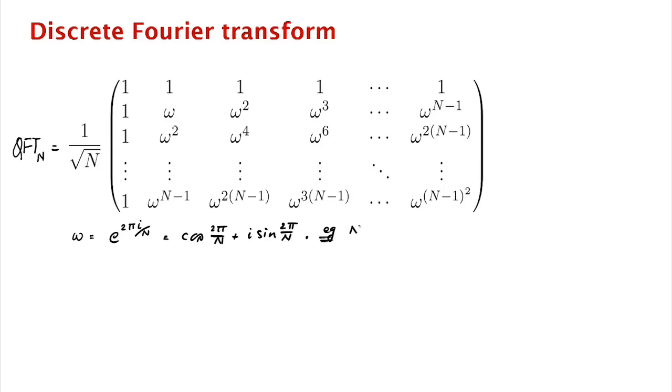So for example, if n was equal to 8, then this would be cosine of 2 pi by 8, which is pi by 4. So omega would be 1 over square root 2 plus 1 over square root 2 i.